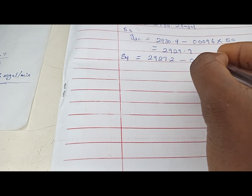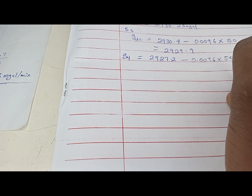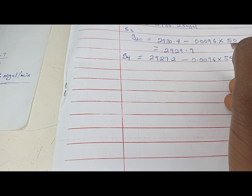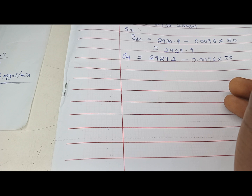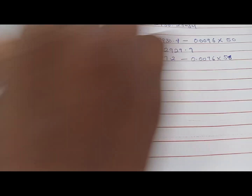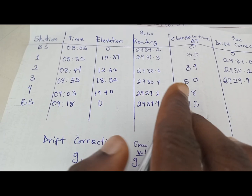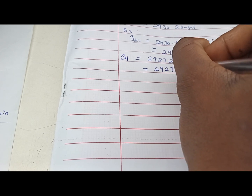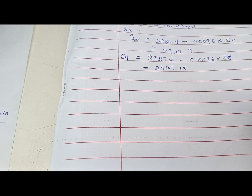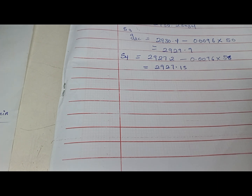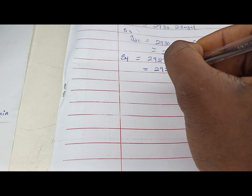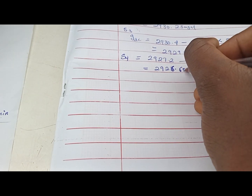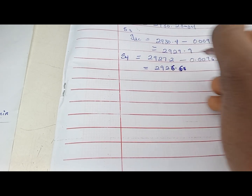For station four, GDC equals 2930.2 minus 0.0096 times 58. The change in time for station four is 58 minutes. The answer is 2926.6 milligals.